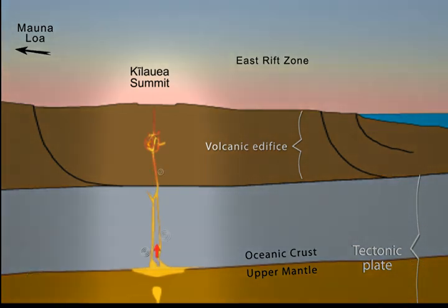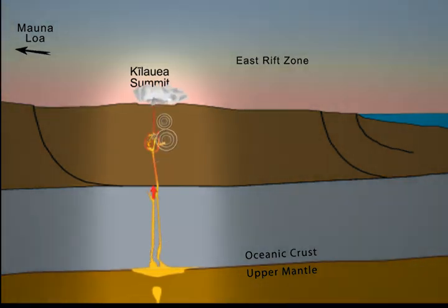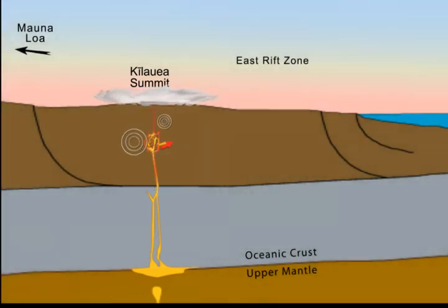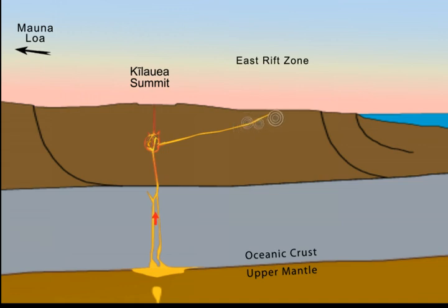Shown first are those earthquakes associated with magma accumulation and movement beneath the volcanoes. As the magma rises through the crust, it breaks rock in the process. Changes of pressure and mass within the volcano create stress in adjacent areas, producing earthquakes on nearby faults and cracks.